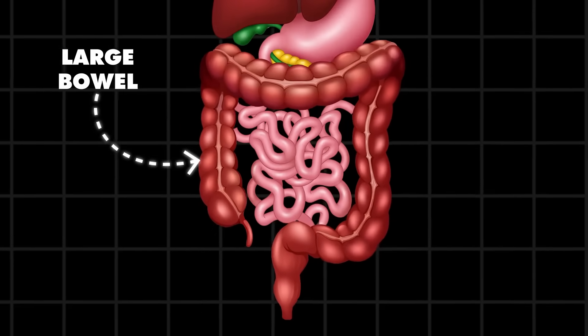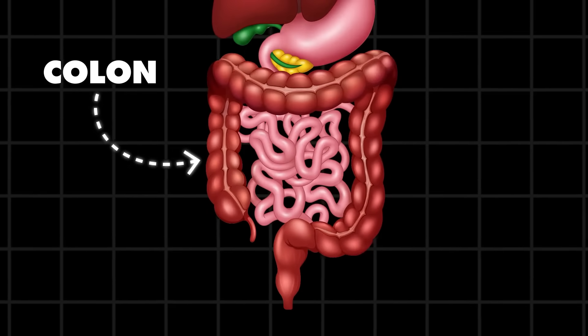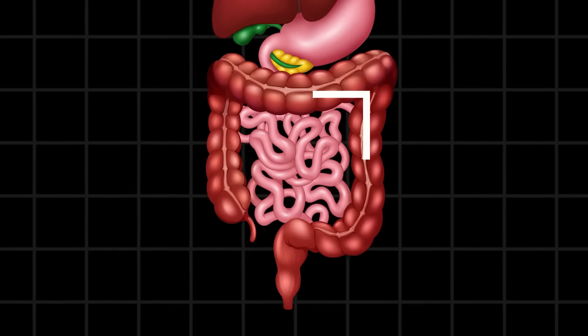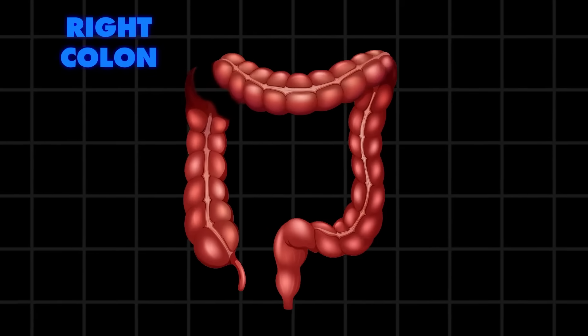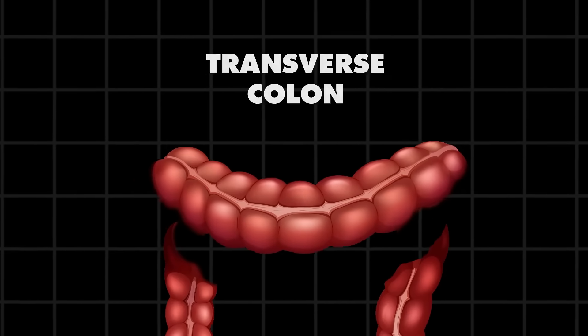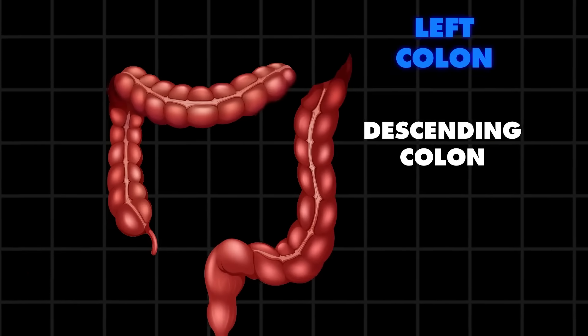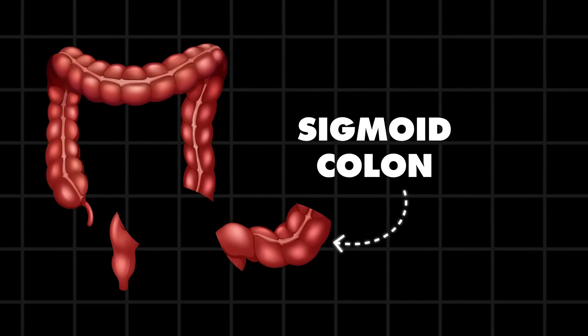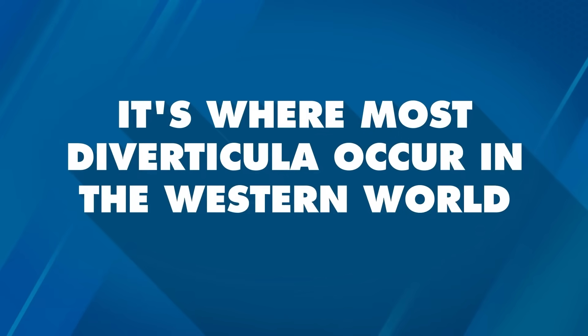The large bowel is known as the colon and it looks kind of like a picture frame. It's divided into the right or ascending colon, the transverse colon, then the left or descending colon, and an S-shaped segment known as the sigmoid colon. This segment, the sigmoid colon, is just before the colon ends where stool comes out, and it's where most diverticula occur in the western world.